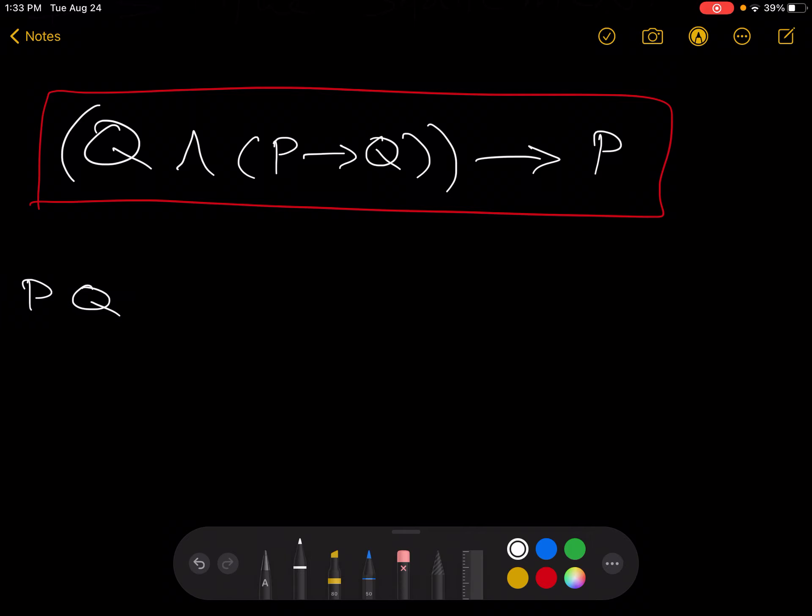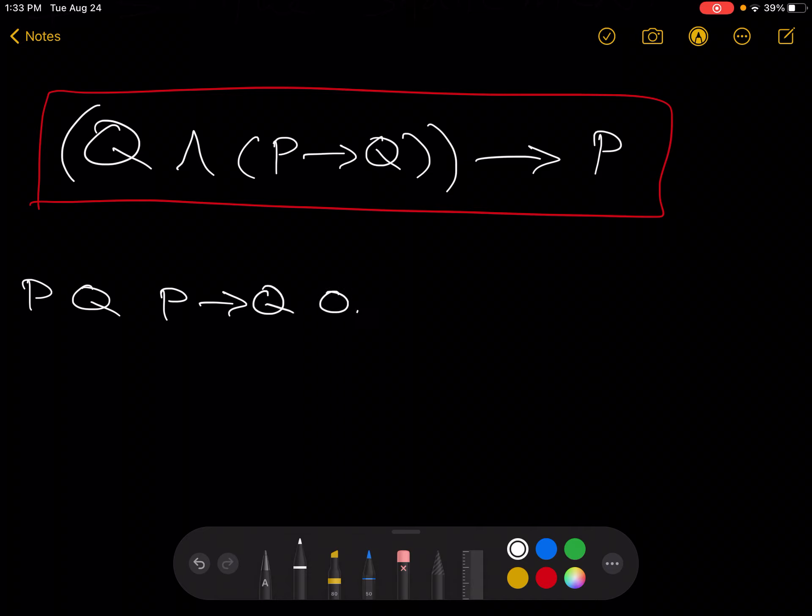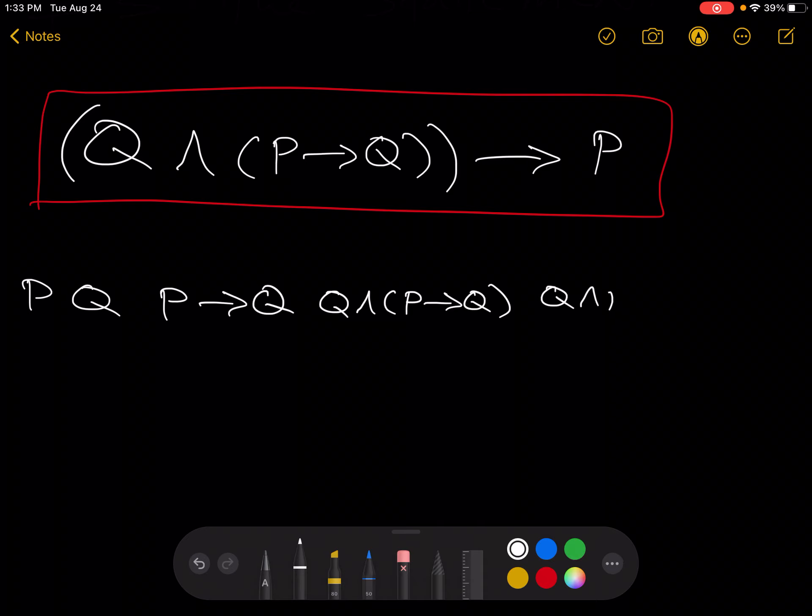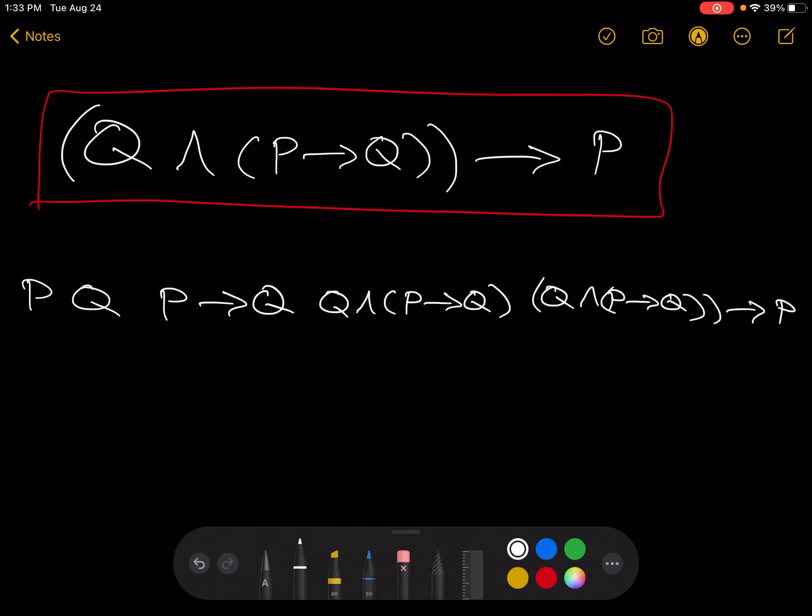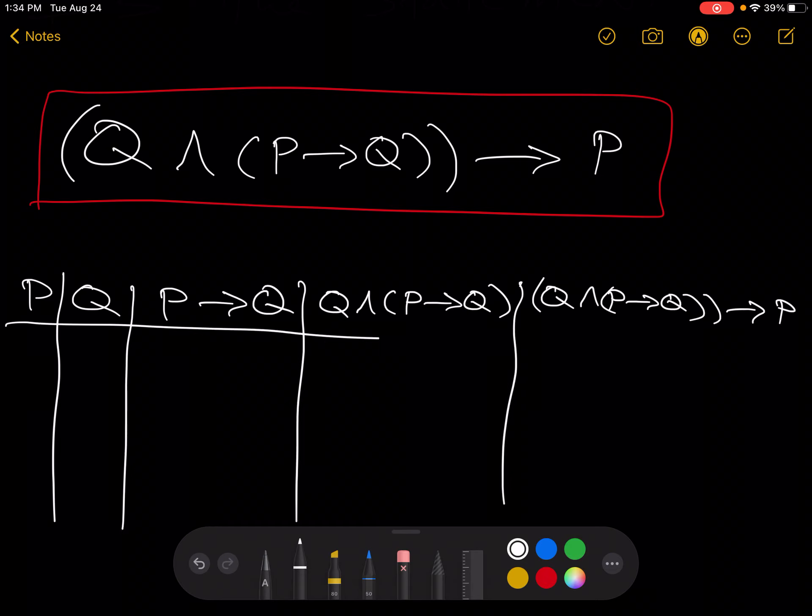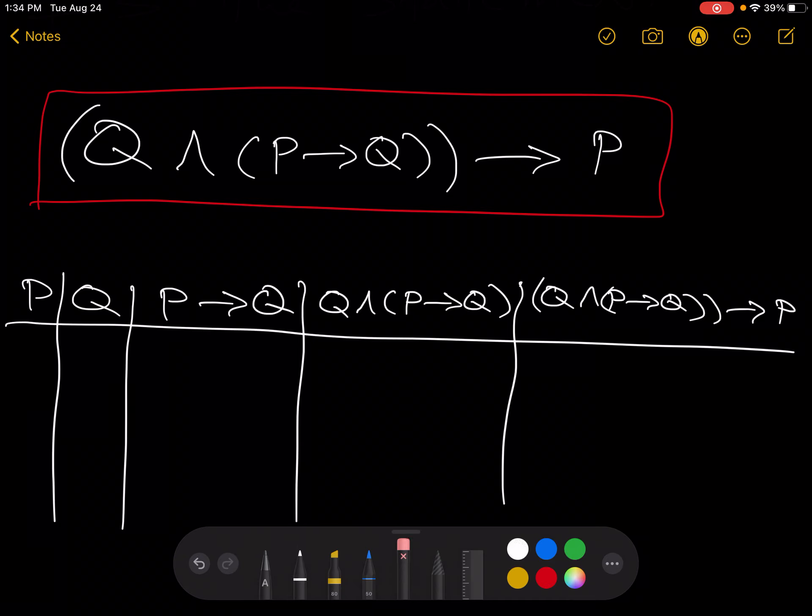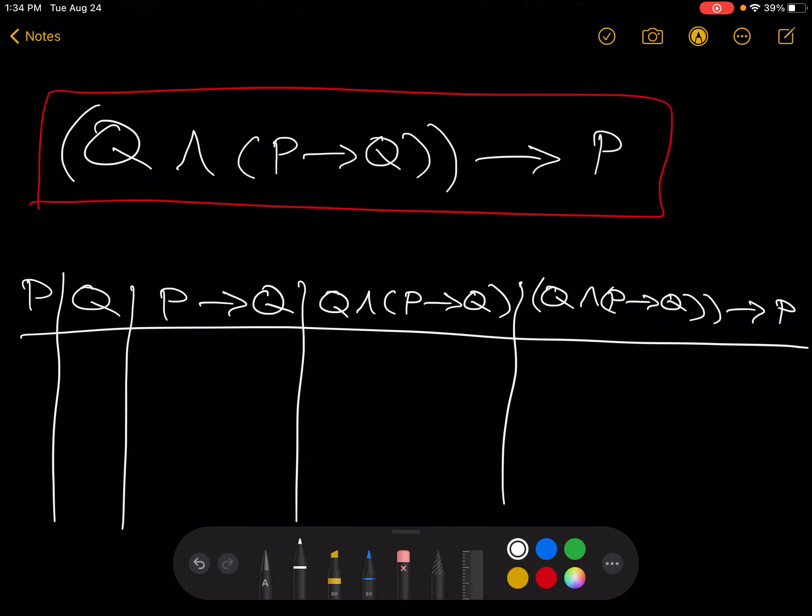P, Q. Let's see. P implies Q. Q and P implies Q. And lastly, a column for the actual statement we're trying to talk about. Q and P implies Q implies P. Q and P. There we are.